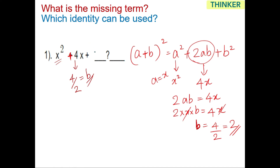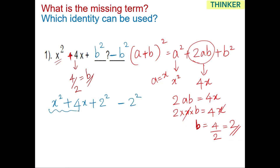Step 1 is done. For step 2, add and subtract b squared so the expression remains unchanged. So: x squared plus 4x plus 2 squared minus 2 squared. These are the terms needed to complete the square, giving x plus 2, the whole square, minus 2 squared.